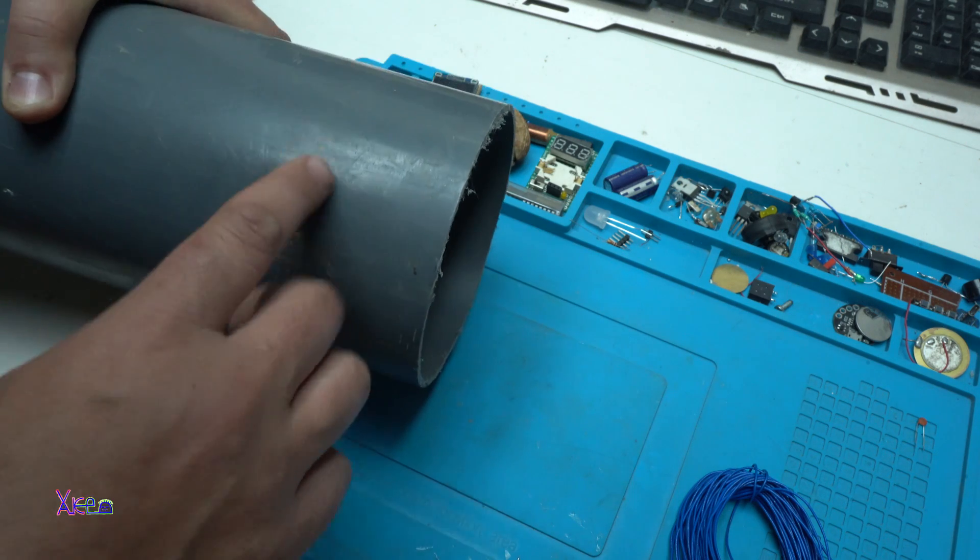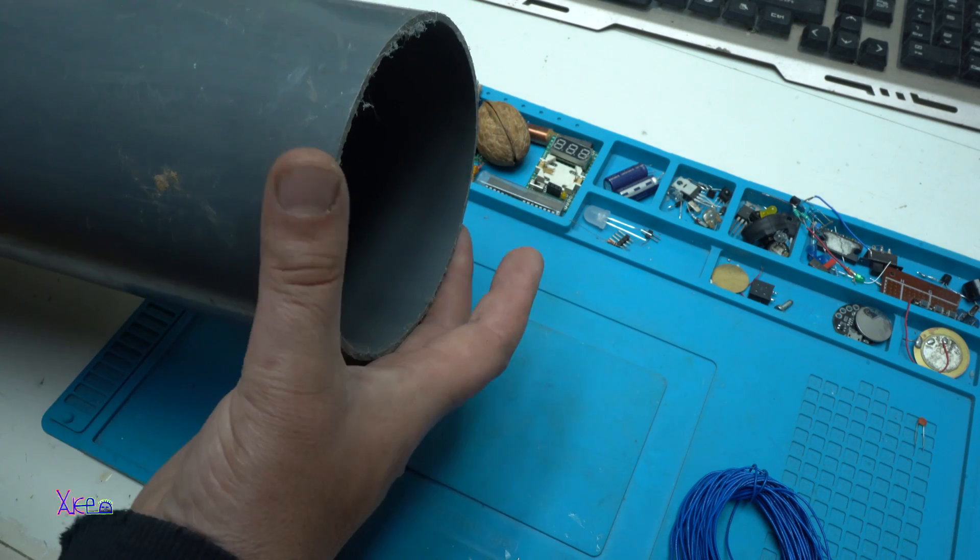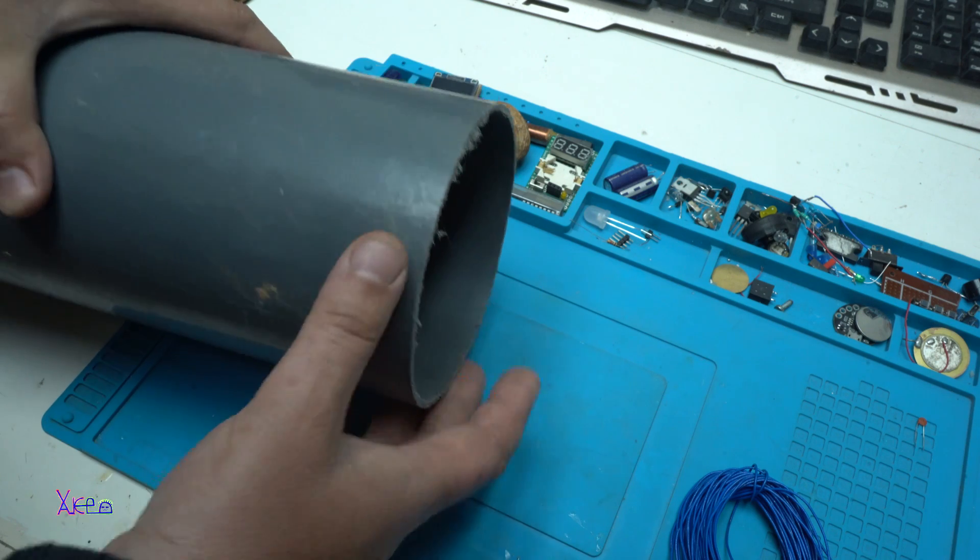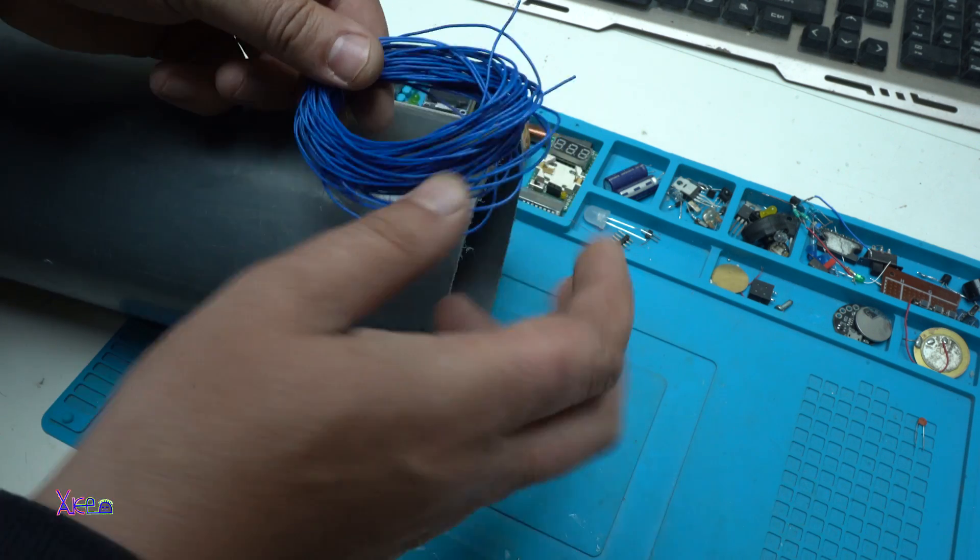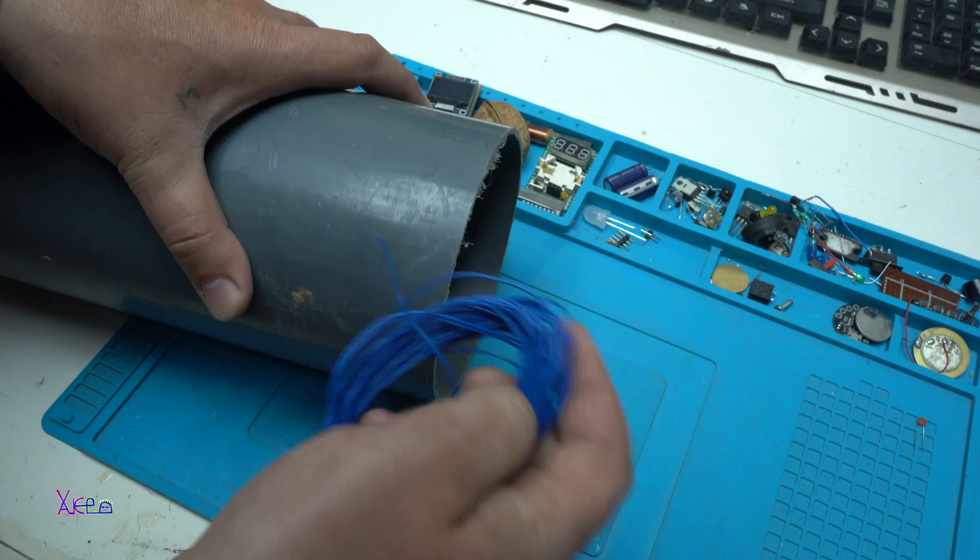Now, around this pipe that has a diameter of 12 centimeters, I am going to wind the wire and make the coil.